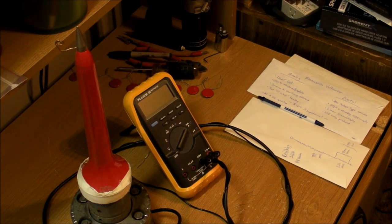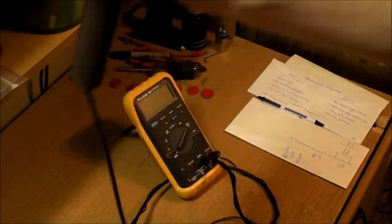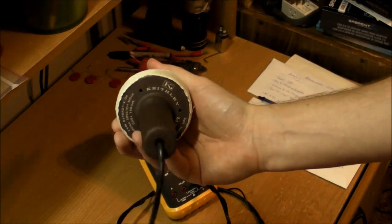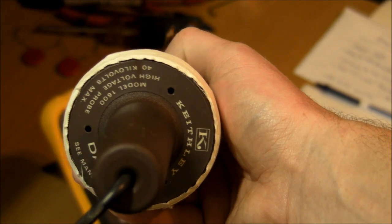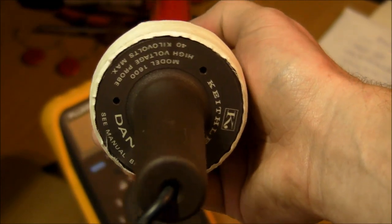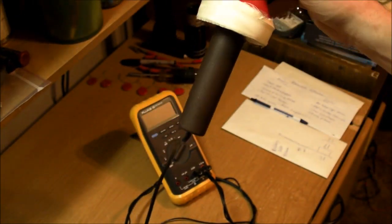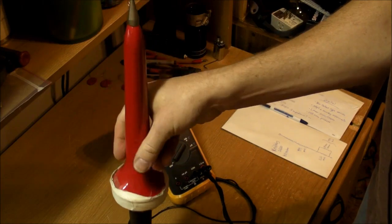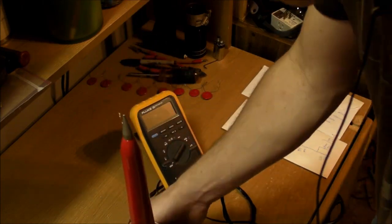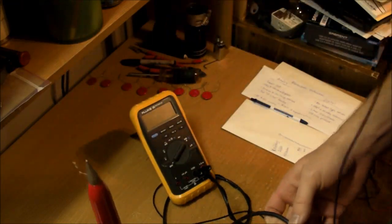Also compare it to this, which is a Keithley 1600 high voltage probe. Let me take it out of this big metal base. Keithley model 1600, 40 kilovolt capacity. It works extremely well DC and low frequency AC, so 60 hertz would be pretty good, plus or minus a couple percent I think.